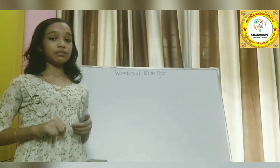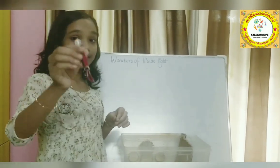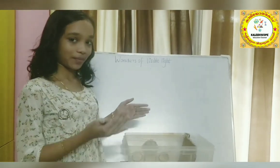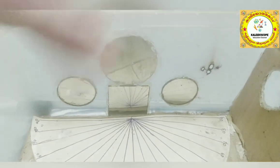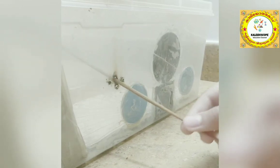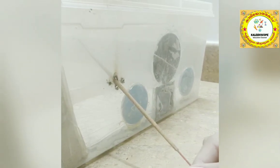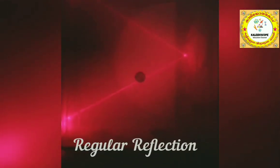Let's do a small experiment. The materials we are going to use: a laser torch and a smoke box. There is a plain mirror fixed inside it. We fill the smoke box with smoke using an agarbatti to see the path of light clearly. Can you see the reflection of light? Which reflection is going on here? Yes! Regular reflection.